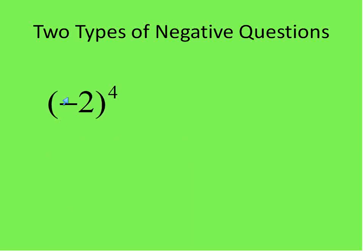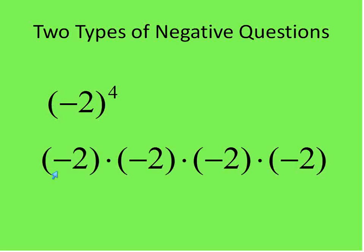The other type of negative question is where you have negative 2 raised to the power of 4 inside parentheses — and that means something very different. That means negative 2 times negative 2 times negative 2 times negative 2. Everything inside the parentheses gets raised to the power of 4. Negative 2 times negative 2 is positive 4, times negative 2 is negative 8, times negative 2 is positive 16. The rule: if the exponent is even, the result is positive; if the exponent is odd, the final answer is negative.